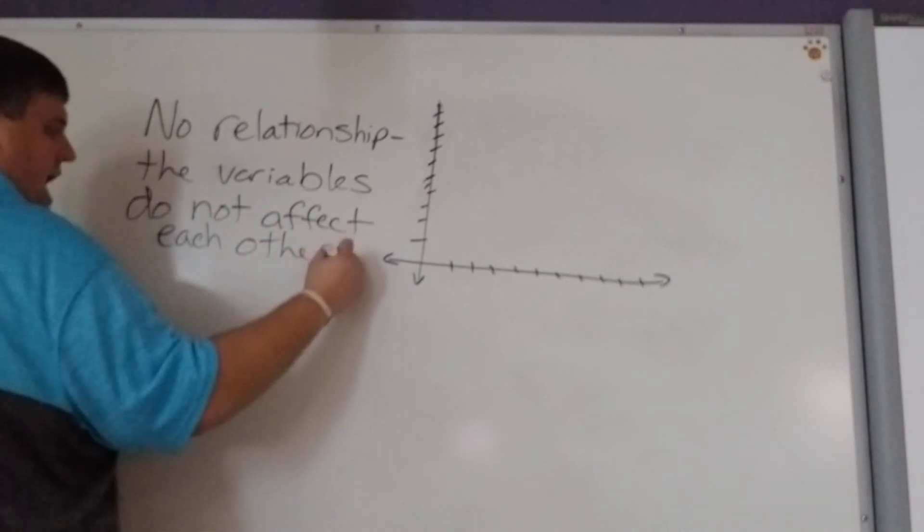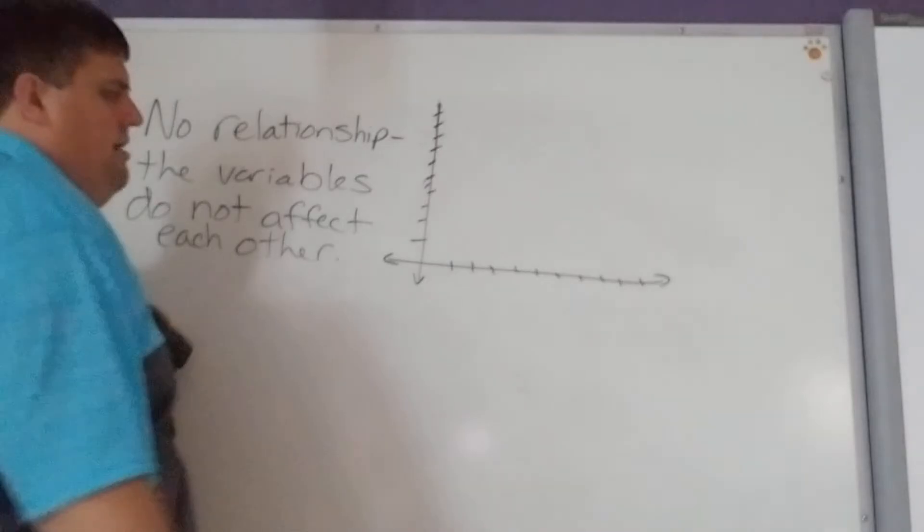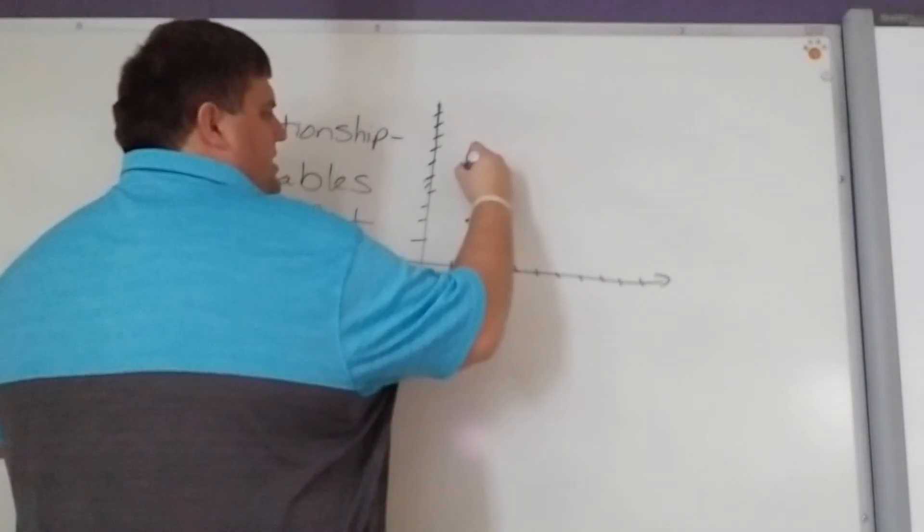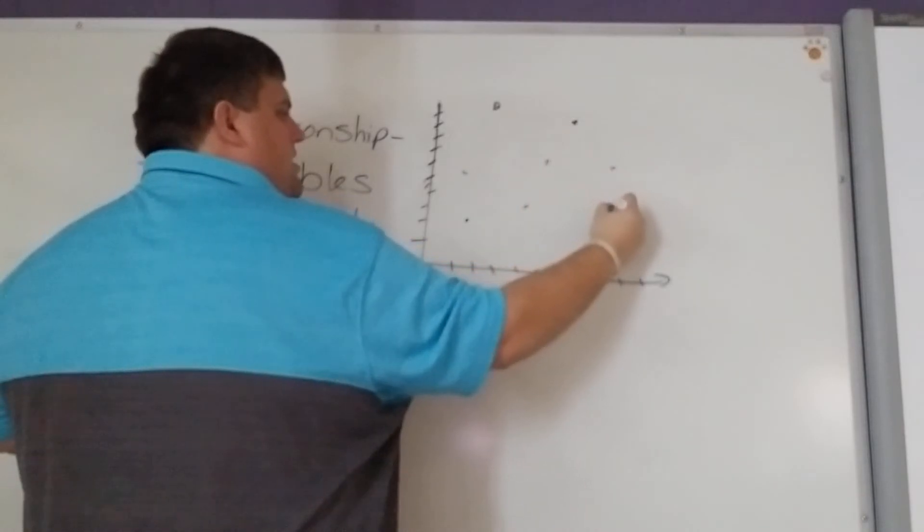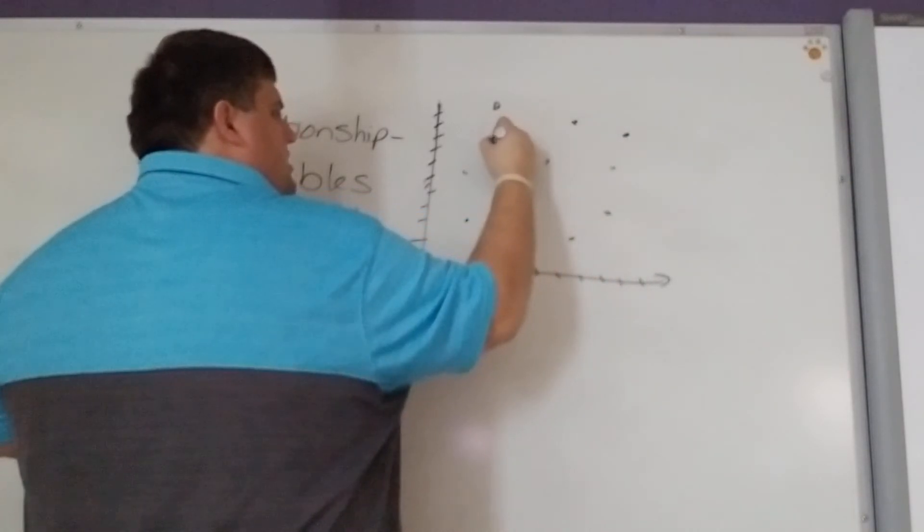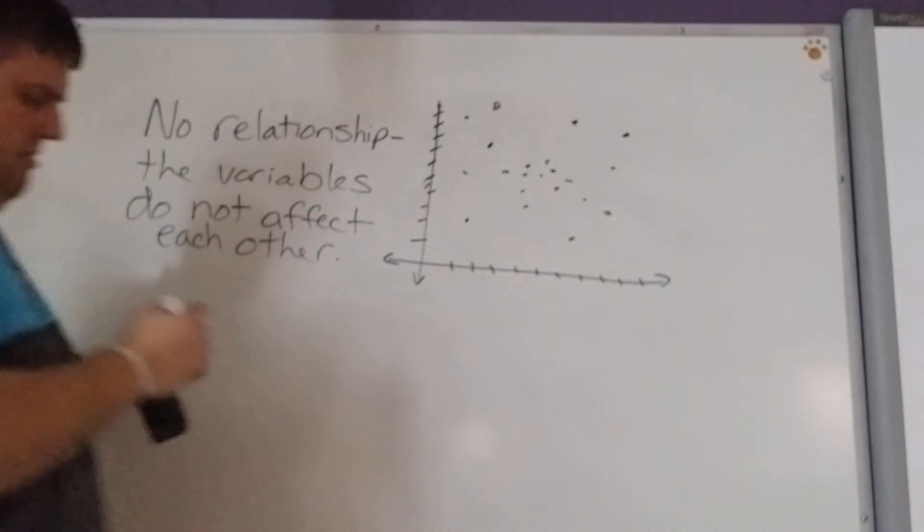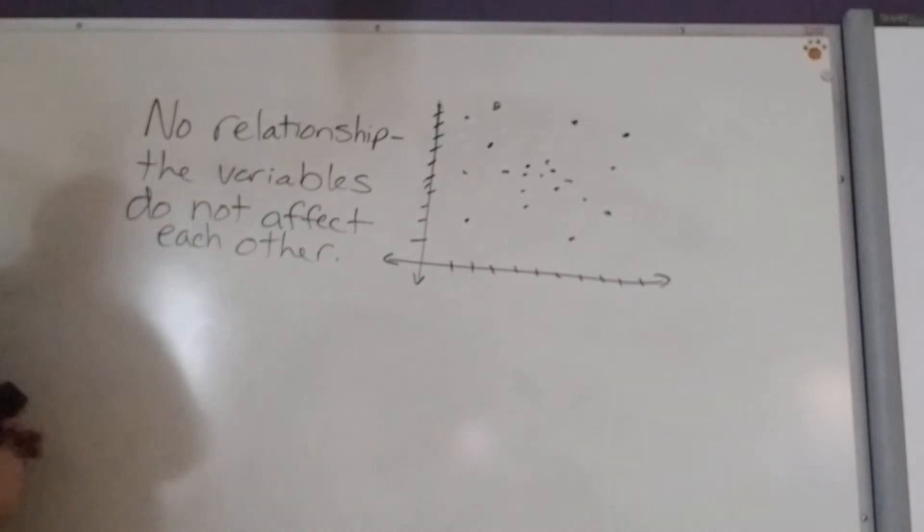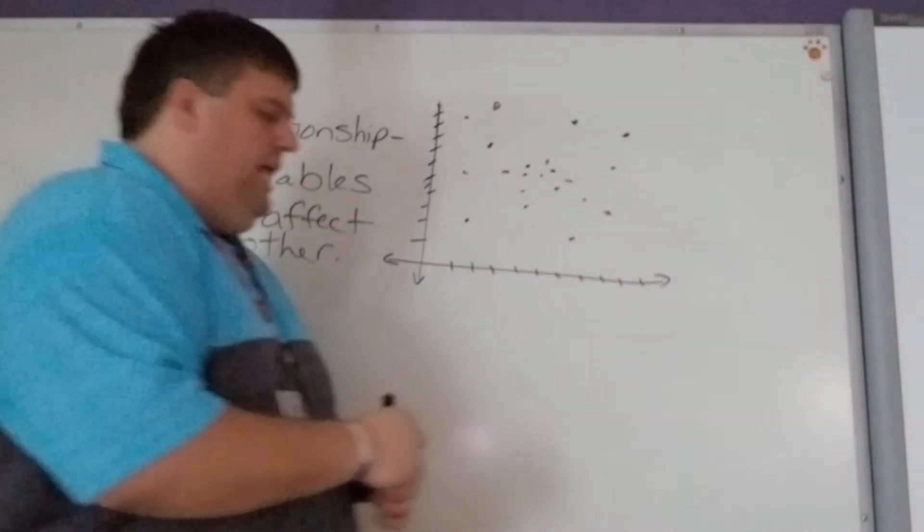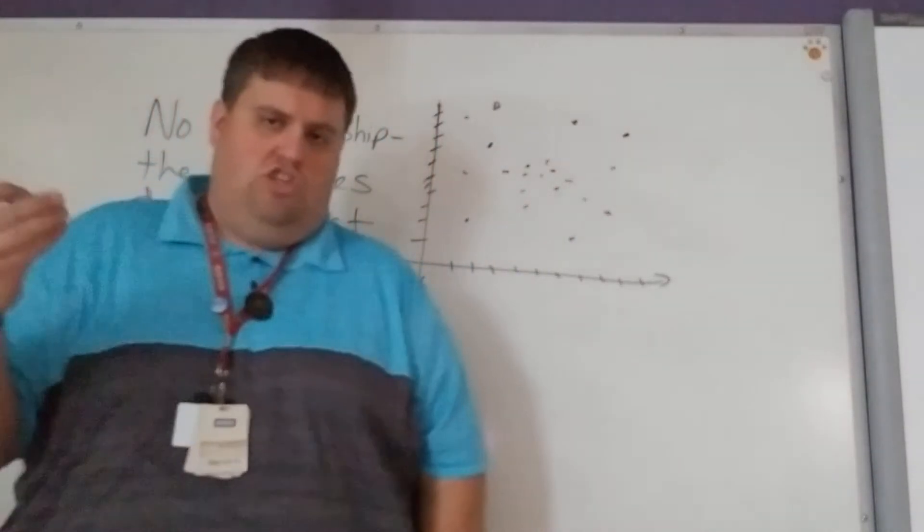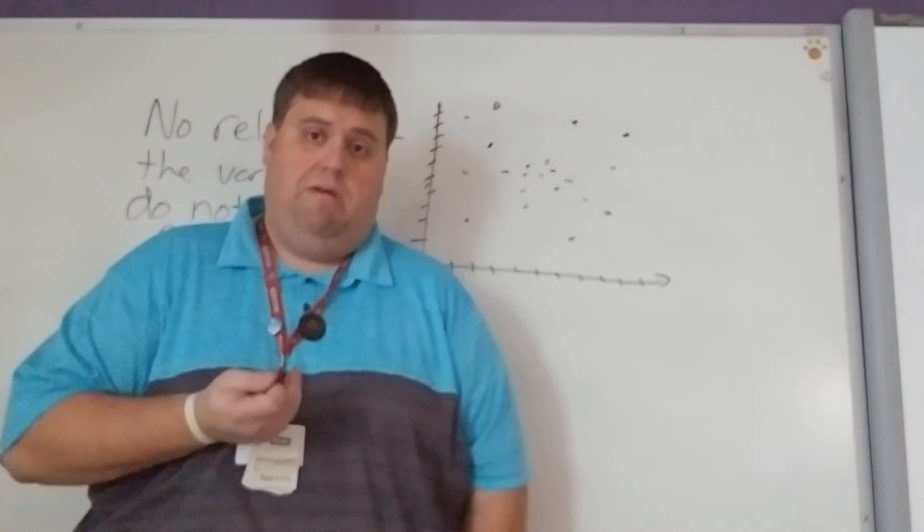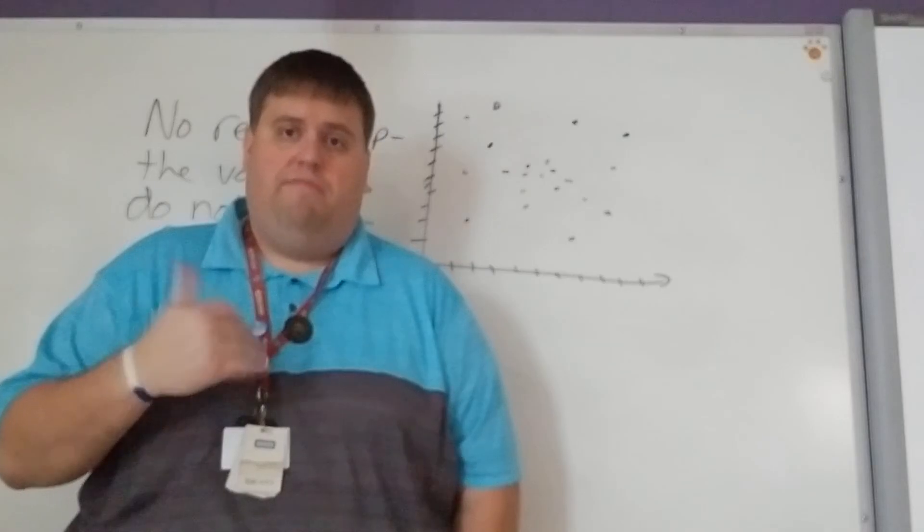And you're thinking, yeah, who cares? The scatterplot would look something like points all over the place. That would be a no relationship. That's not really telling us any info. But what's interesting is that no relationships do tell us some information. It tells us that these two things don't affect each other.